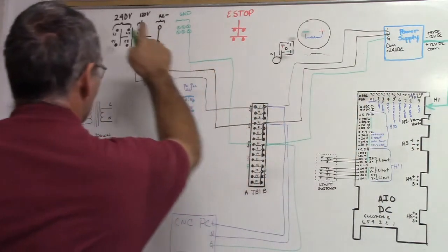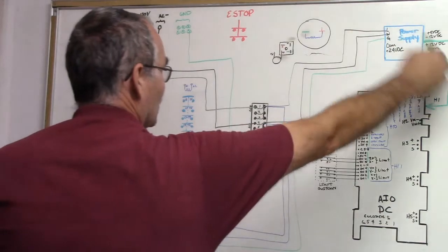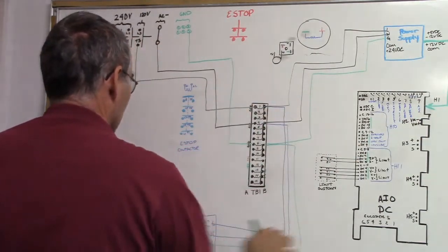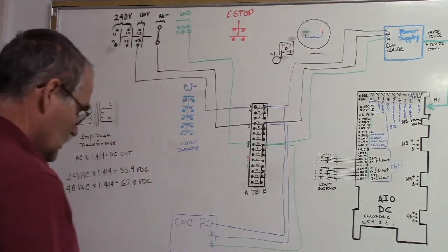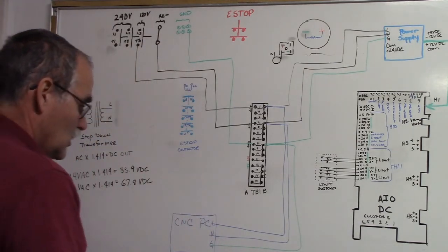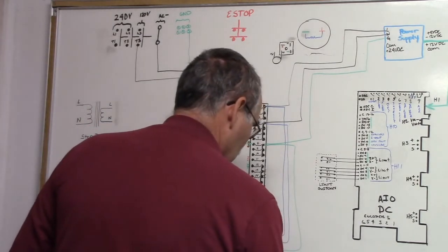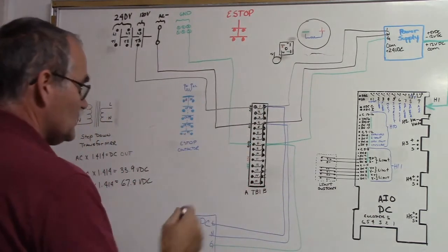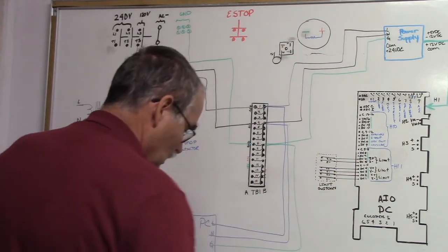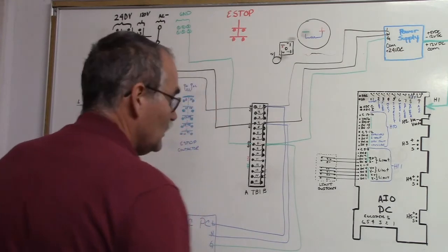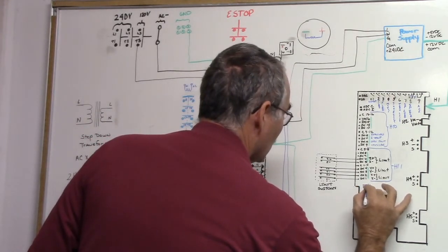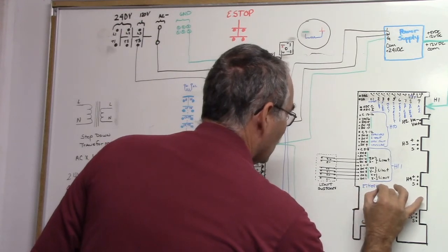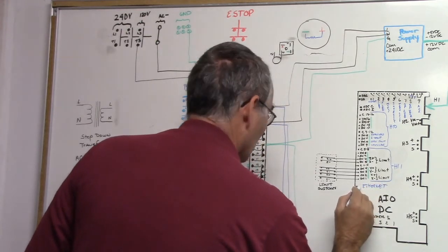So when you power up now, we got power going up to the power supply, powering up the all-in-1 DC. We've got this, we go to the CNC PC. And then one other thing we've got is the CNC PC ties into the all-in-1 DC. There's an ethernet connector, so an ethernet cable comes out of here, goes down and plugs into the ethernet port.